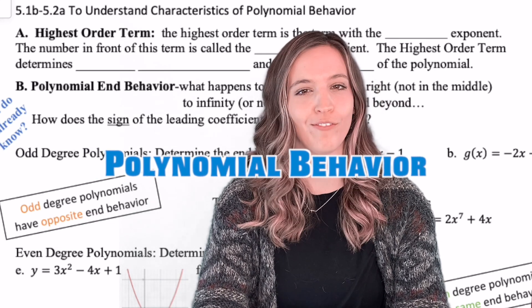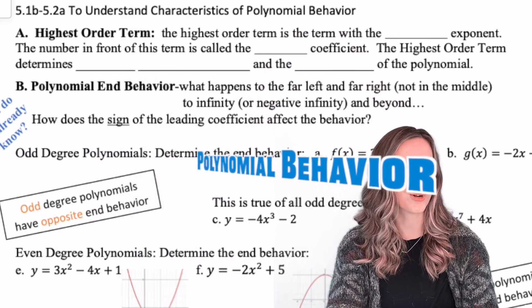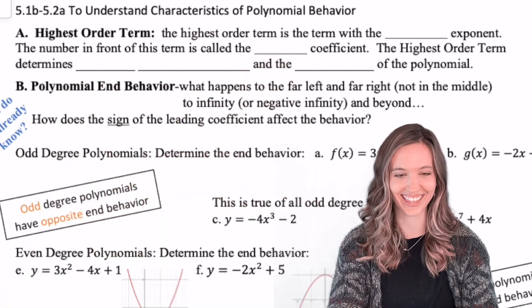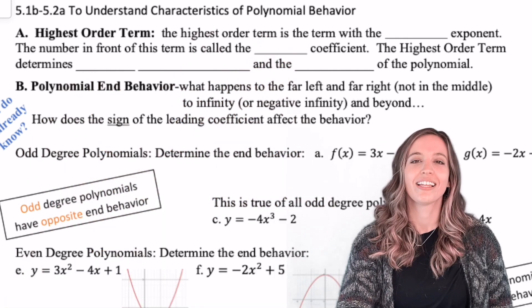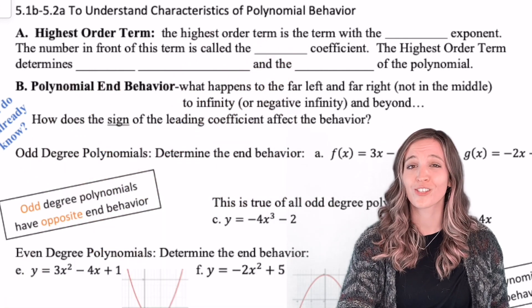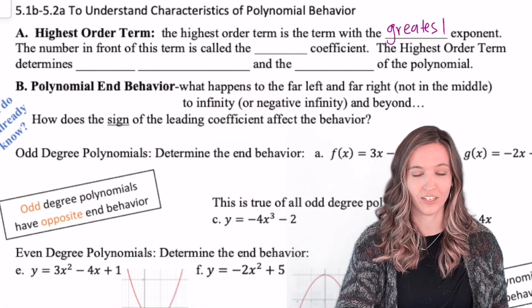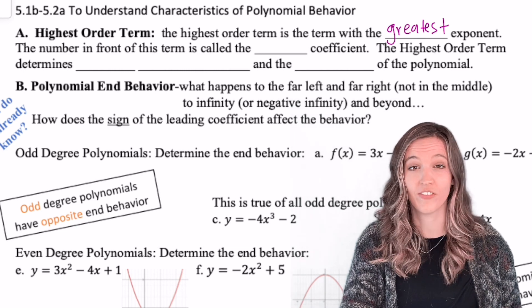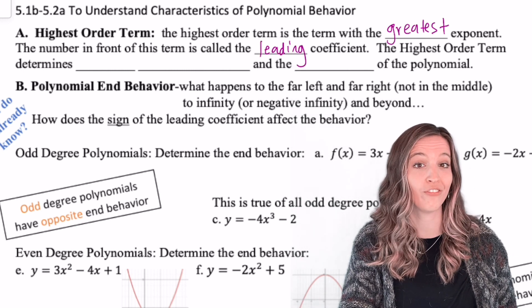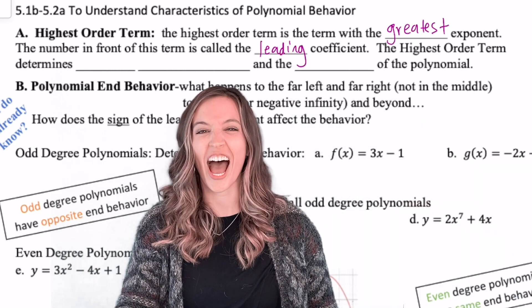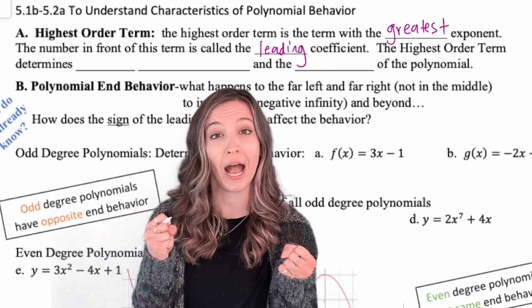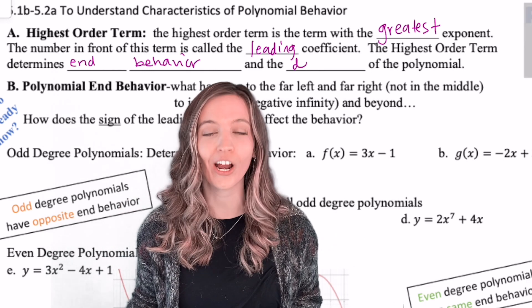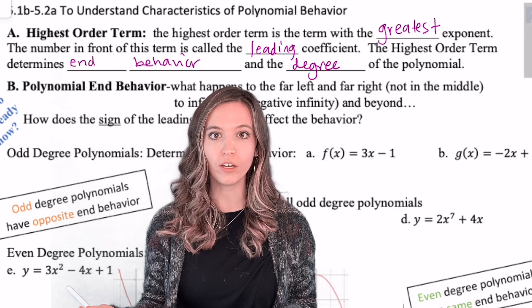Understanding polynomial behavior. The highest order term, H-O-T, hot — I like that one. The highest order term is the term with the greatest exponent. The number in front of this term is called the leading coefficient. The highest order term has so much power: it determines the end behavior and the degree of the polynomial.